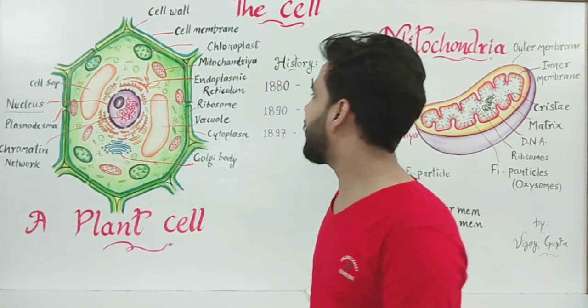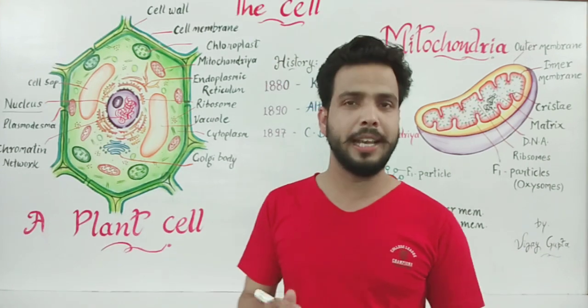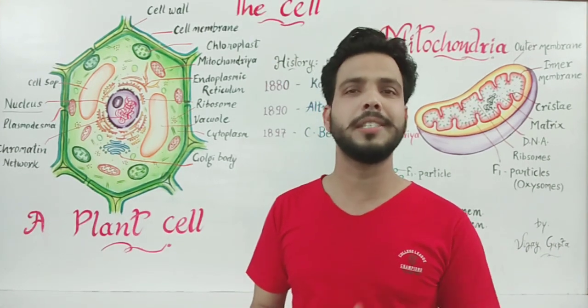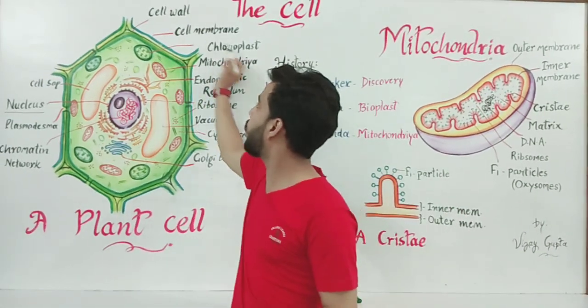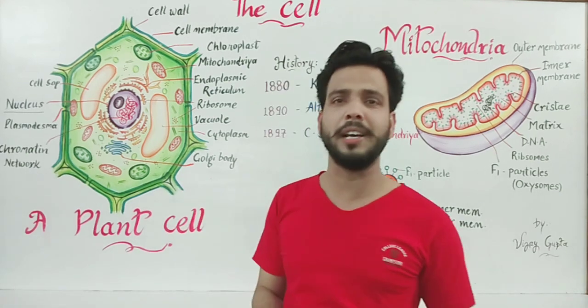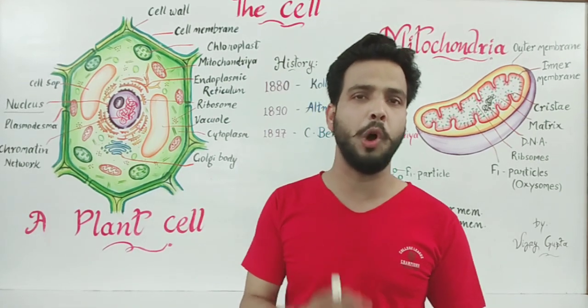Mitochondria is the second largest cell organelle. As I told you before, the first largest cell organelle is chloroplast or plastids and mitochondria is the second largest cell organelle.